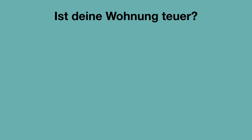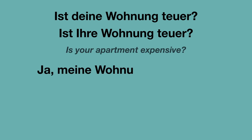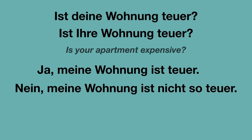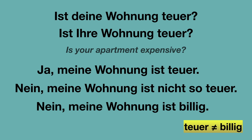Ist deine Wohnung teuer? In der Sie-Form: Ist Ihre Wohnung teuer? Both mean: Is your apartment expensive? Ja, meine Wohnung ist teuer. Oder negative Antwort: Nein, meine Wohnung ist nicht so teuer. Oder: Nein, meine Wohnung ist billig. Teuer — das Gegenteil — billig. Teuer means expensive, billig means cheap.